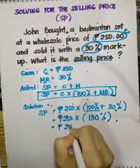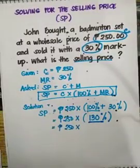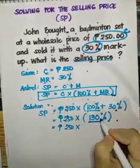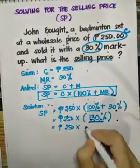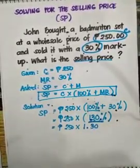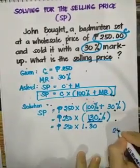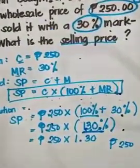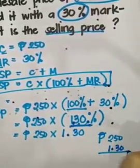Now we will multiply 250 by 130%, but we have to make it into a decimal first by moving the decimal point two places to the left. So our number will be 1.30.